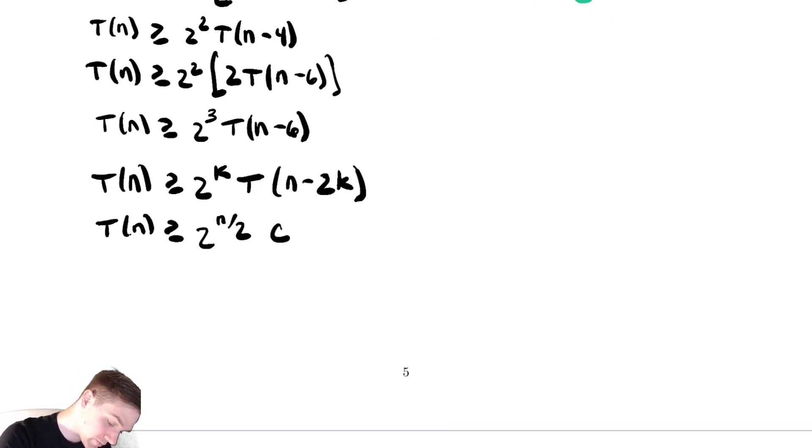greater than or equal to two to the n over two times t of zero which is c. t of n is in big omega of radical two raised to the n and this is an exponential lower bound.